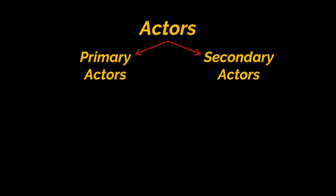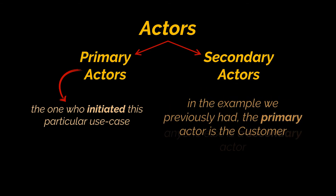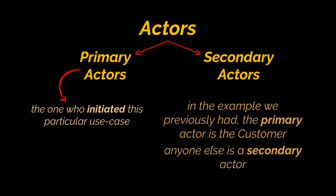We typically refer to actors as primary and secondary (or supporting) actors. Primary actors aren't necessarily the most important — they're simply the ones who initiated the particular use case. In the shopping cart example, the primary actor was the customer; anyone else is a secondary actor. The initiated use case might go through many steps, and some of those steps might fail, which leads us to discussing how to sketch out the scenario.